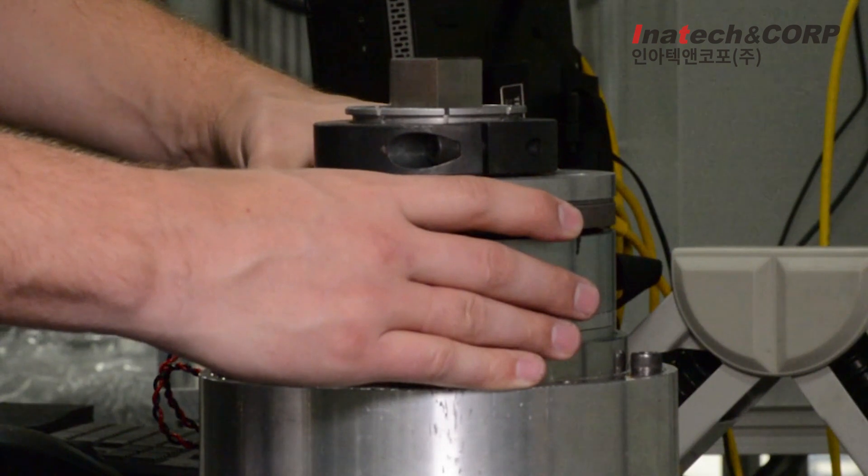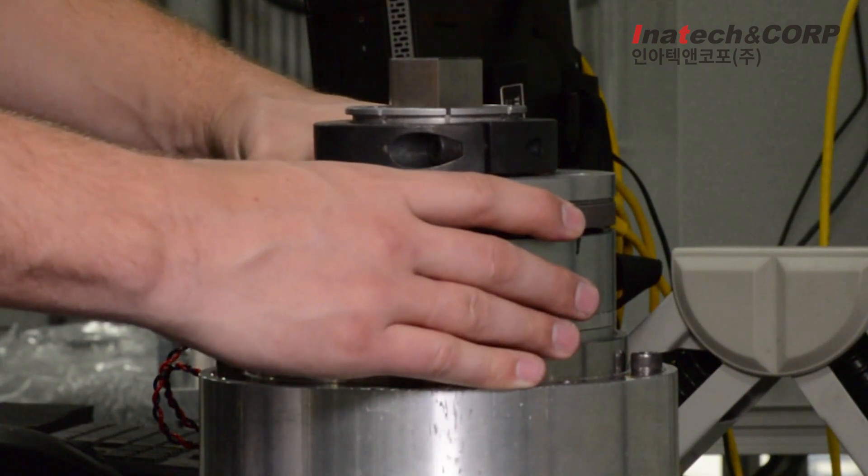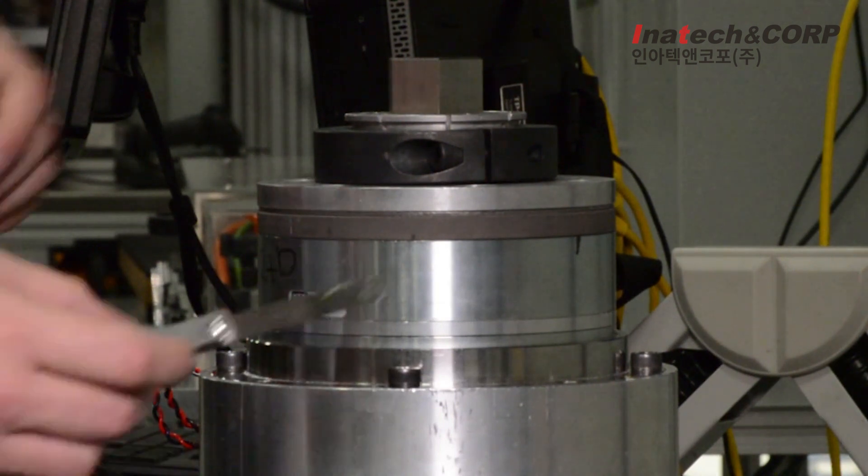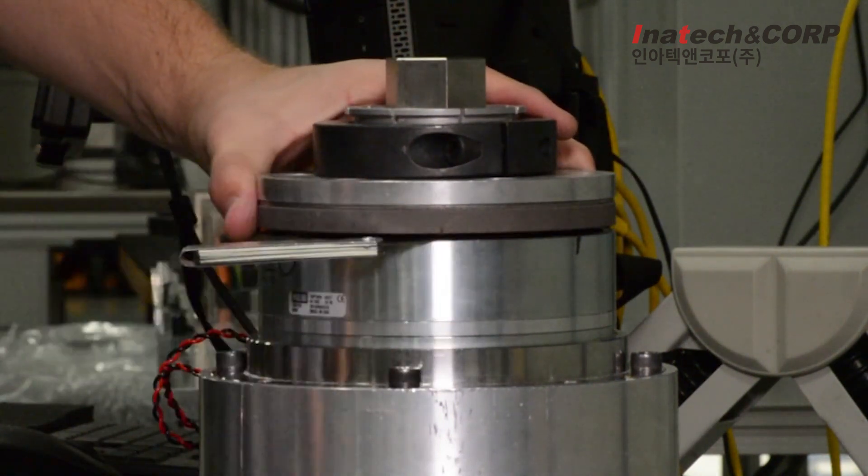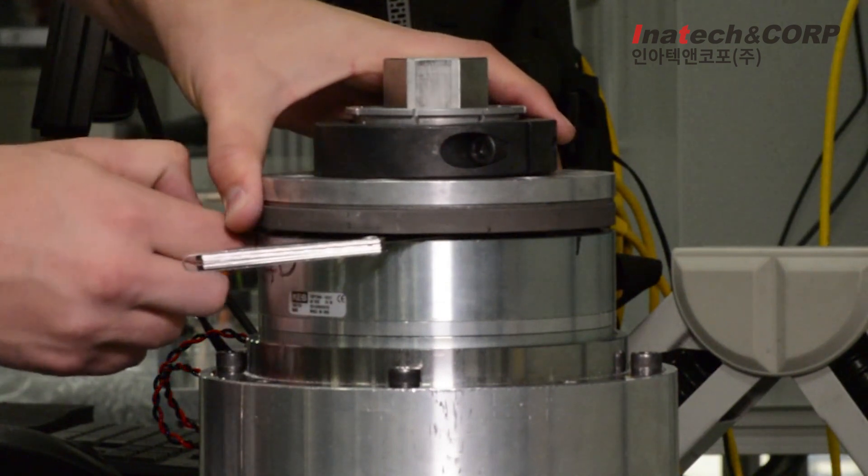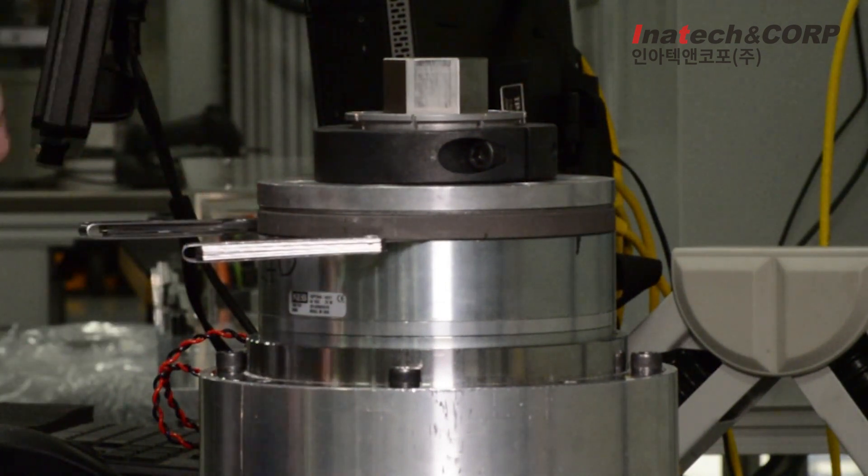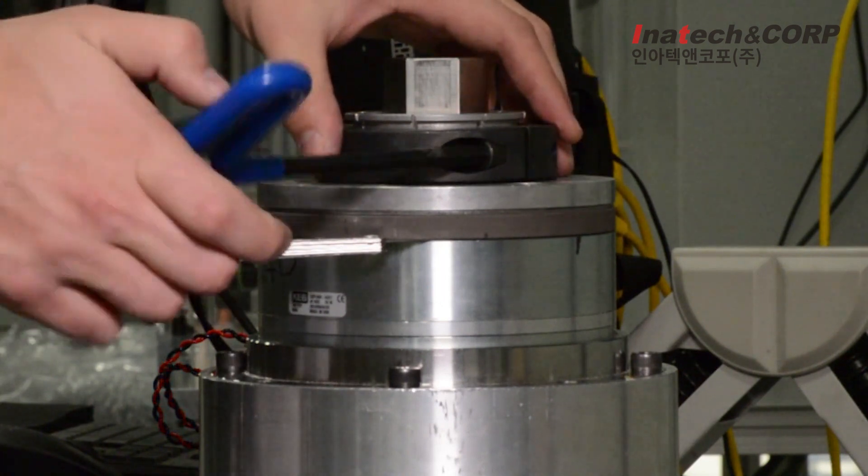Slide the hub armature onto the shaft. Use shims of the proper thickness to set the correct air gap. This brake is a size 10 so the nominal air gap is 0.5 millimeters. When the hub armature is in place at the correct air gap, clamp the collar into place.